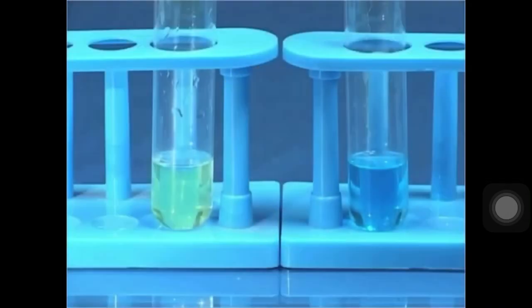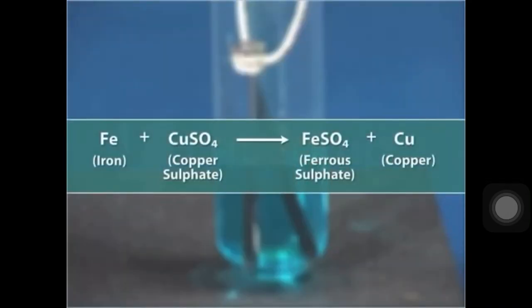What is the reason behind these changes? When iron nails are dipped in copper sulfate solution, the iron metal reacts with copper sulfate which results in the formation of ferrous sulfate and copper metal.